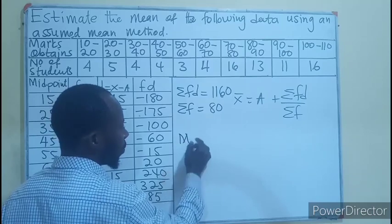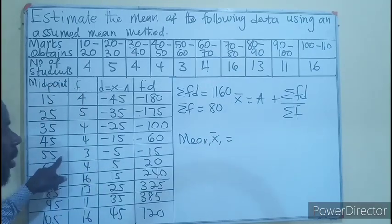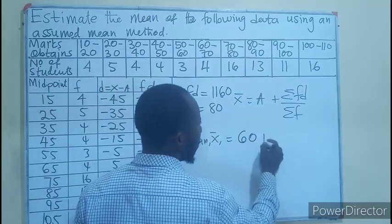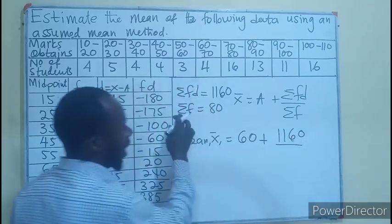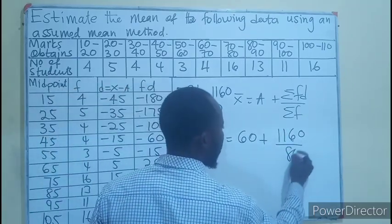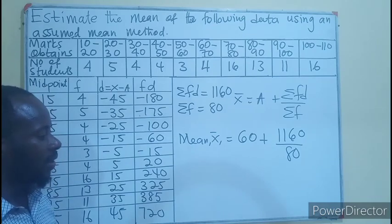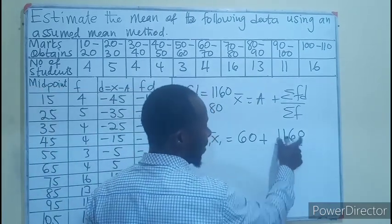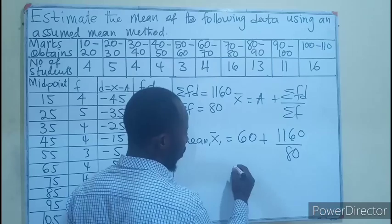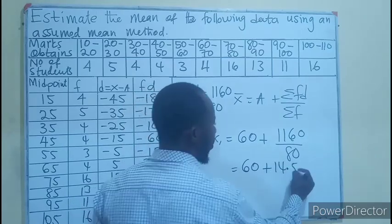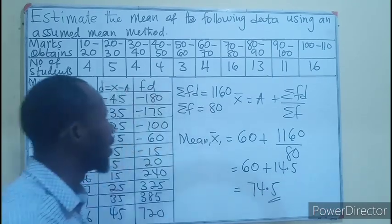So the mean, which is x prime, is going to be the assumed mean that we assumed, which was 60, plus sigma fD which is 1160 divided by sigma f which is 80. The zeros will cancel, and if we divide 116 by 8, that will give us 14.5. So we have 60 plus 14.5, and that gives us 74.5.